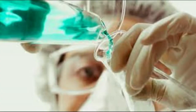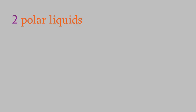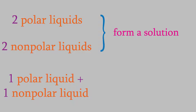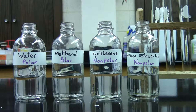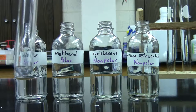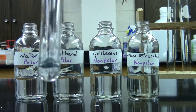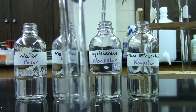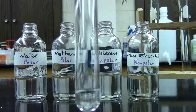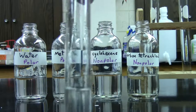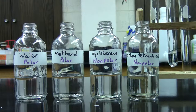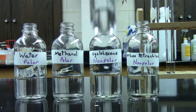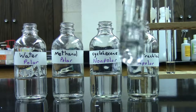For example, what if we want to mix two liquids together? How can we tell whether or not they'll be soluble in each other? The key is to figure out whether or not the two compounds are polar. In general, two liquids will form a solution if they're either both polar or both nonpolar. But if one is polar and the other isn't, then the liquids won't be soluble in each other. Water and methanol are both polar compounds — if we combine them, they mix together and form a solution. The same is true if we combine cyclohexane and carbon tetrachloride, which are both nonpolar compounds. But if we try to combine water, which is polar, and carbon tetrachloride, which isn't, we find that the mixture separates into two layers and we can't form a uniform solution.